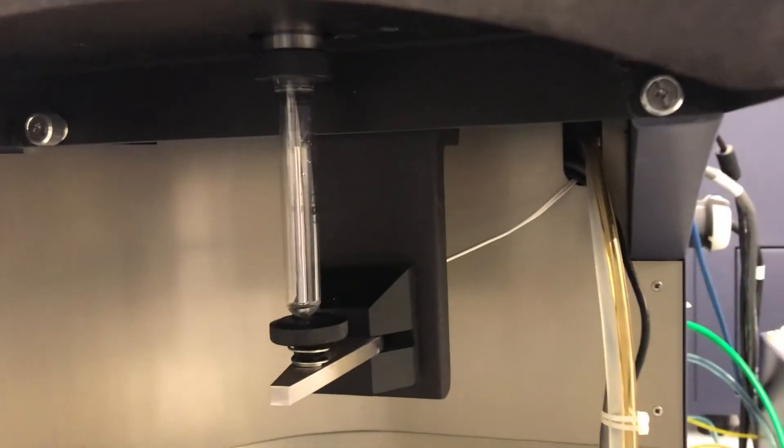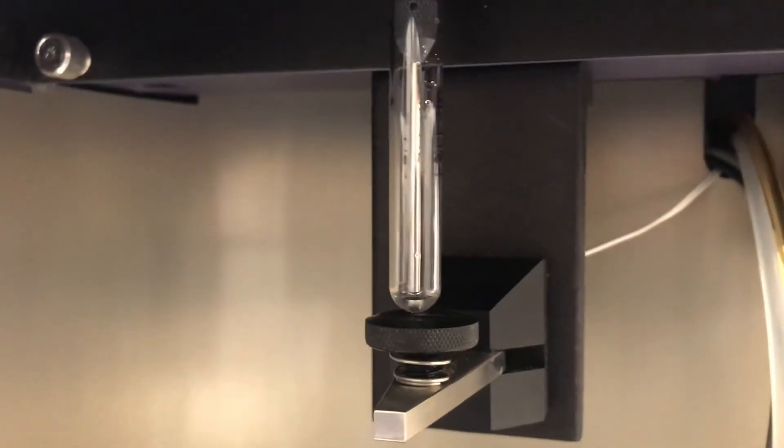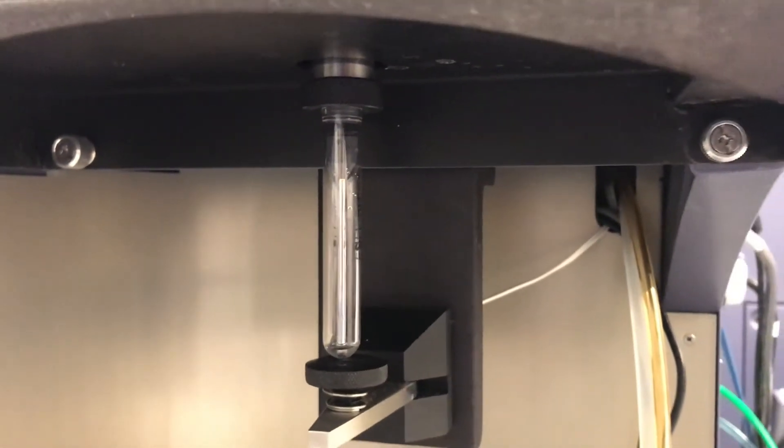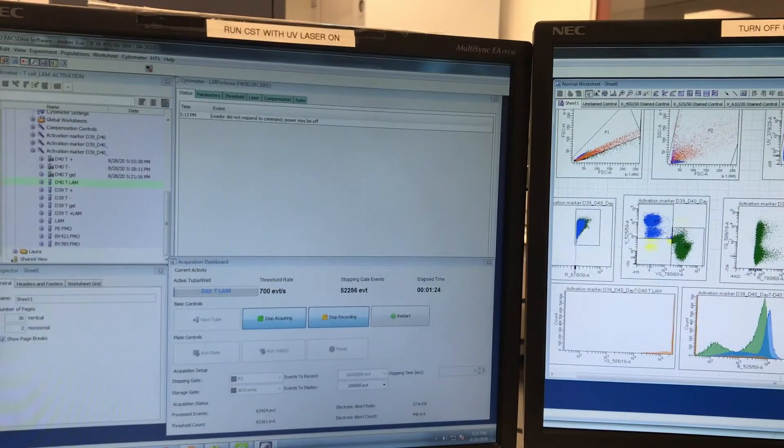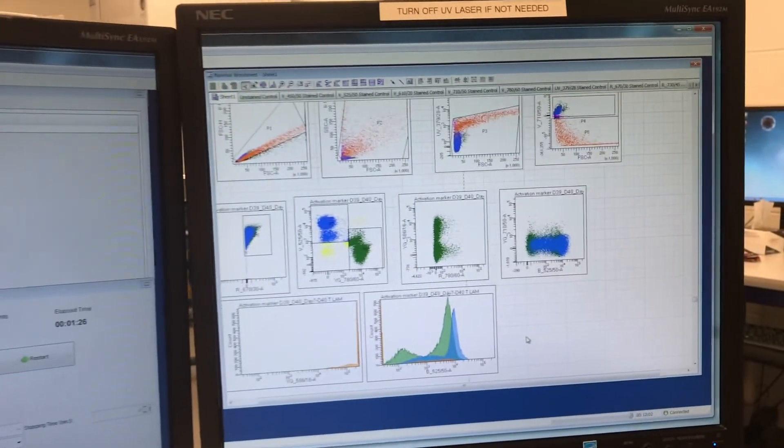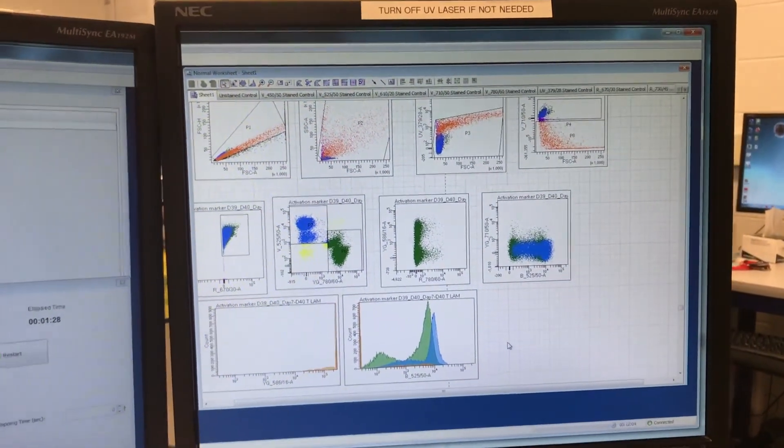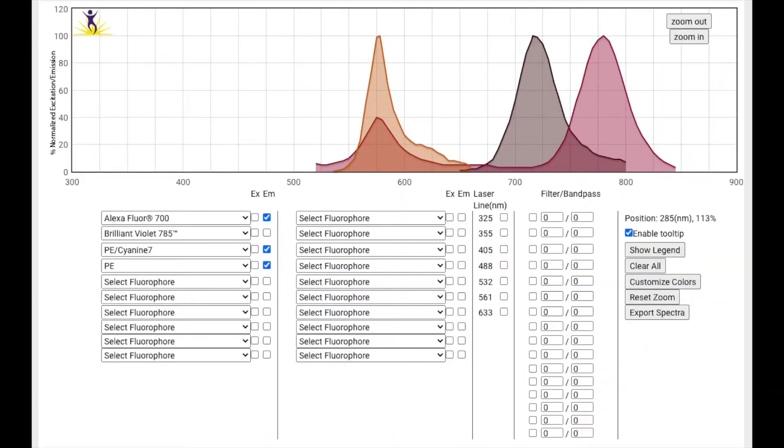Here is showing the location of where you load your samples. And your samples will be processed by the machine and interrogated by different lasers as we talked about before. If this analyzer is being connected to a computer, you can see your cells being processed and shown in different channels as you are acquiring the cells at the same time.